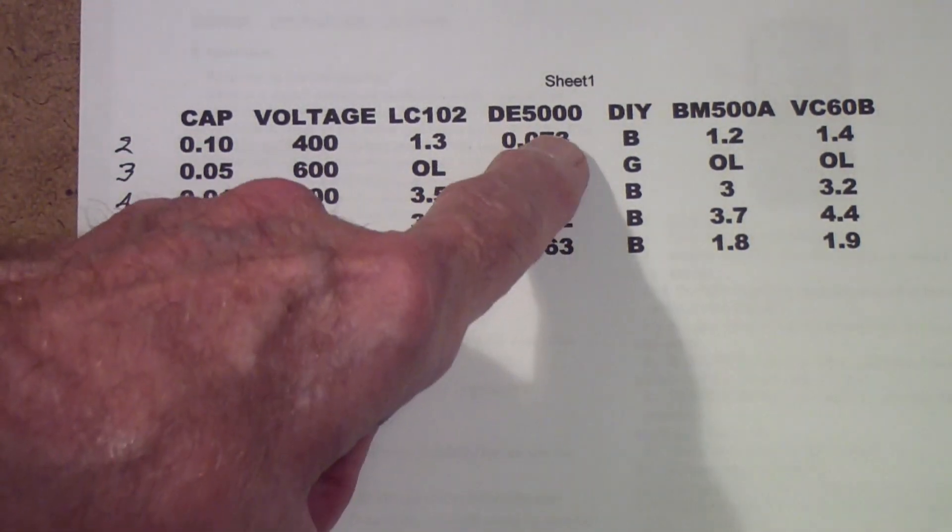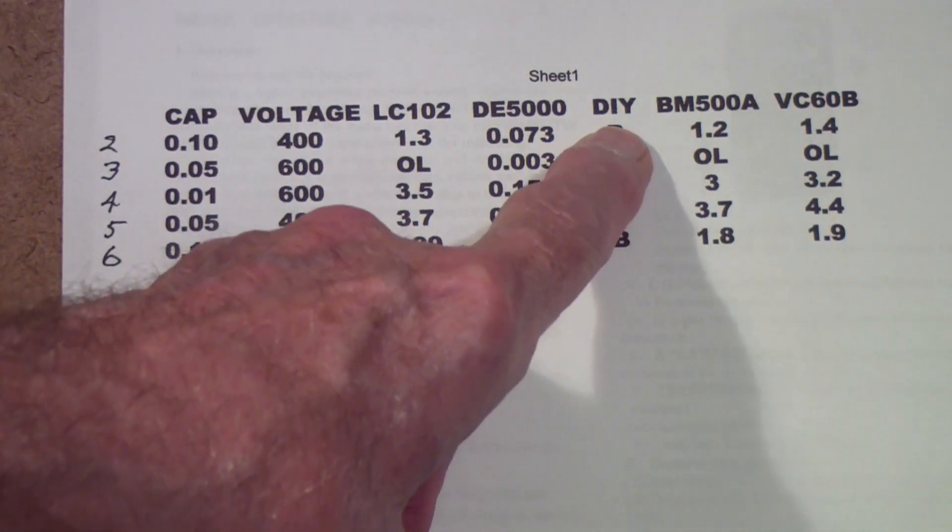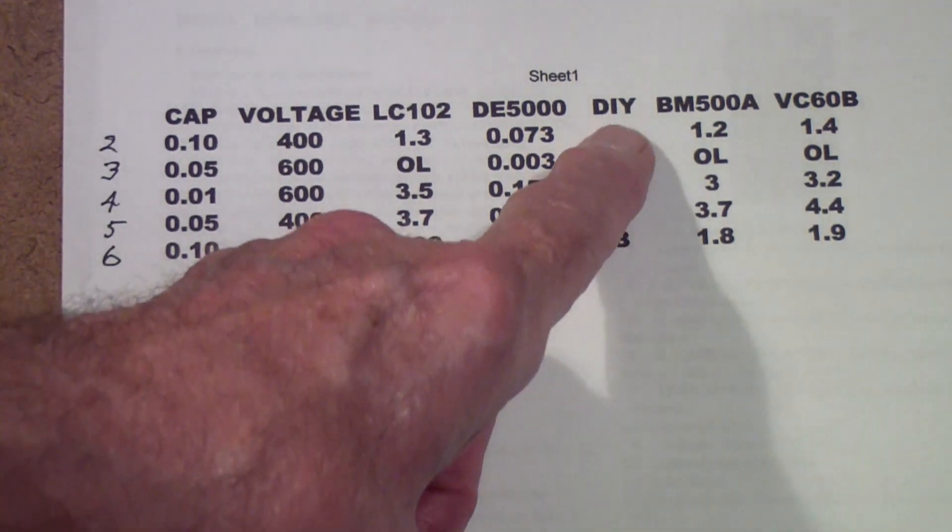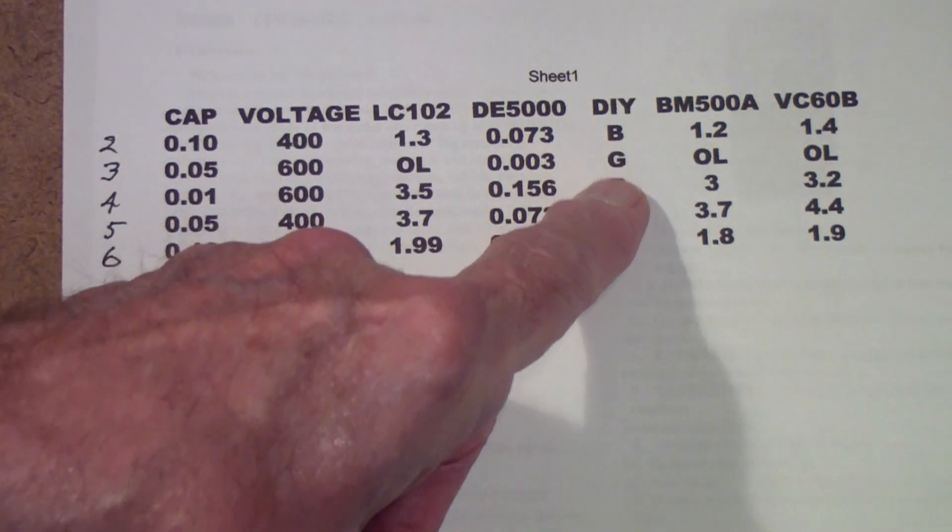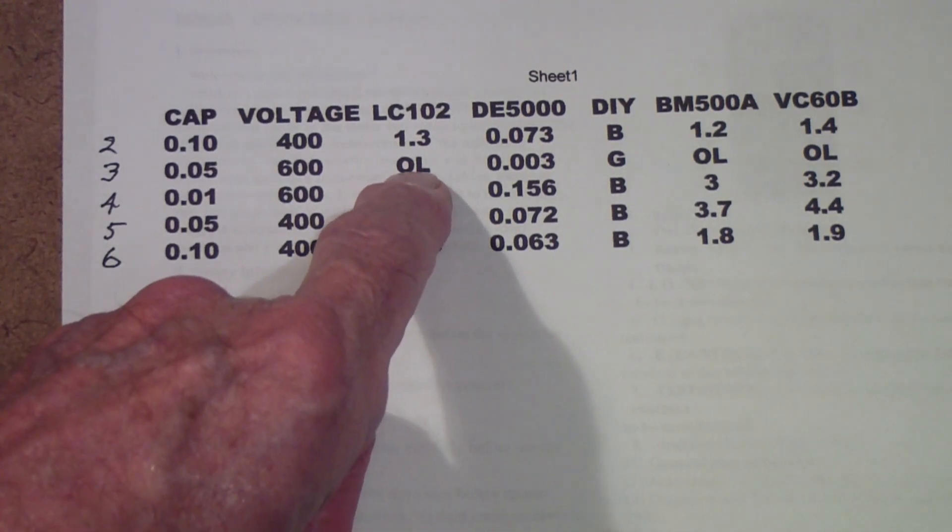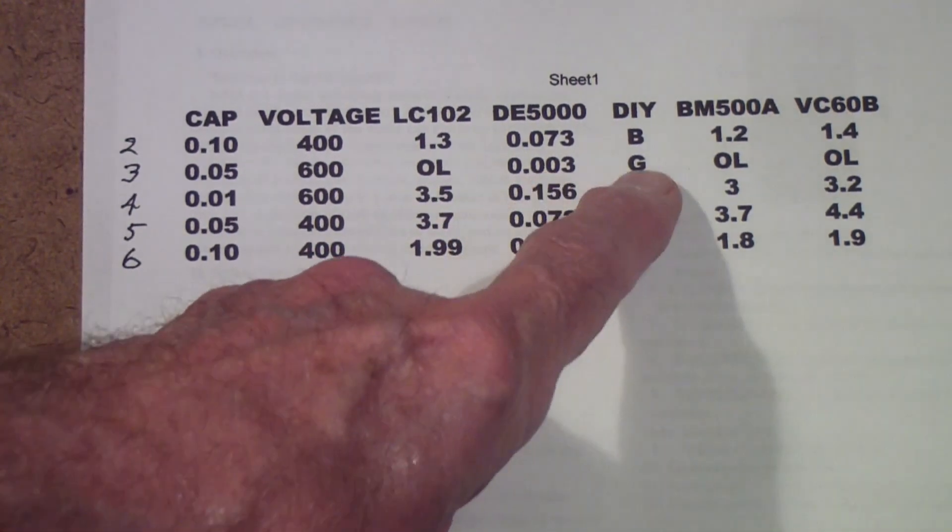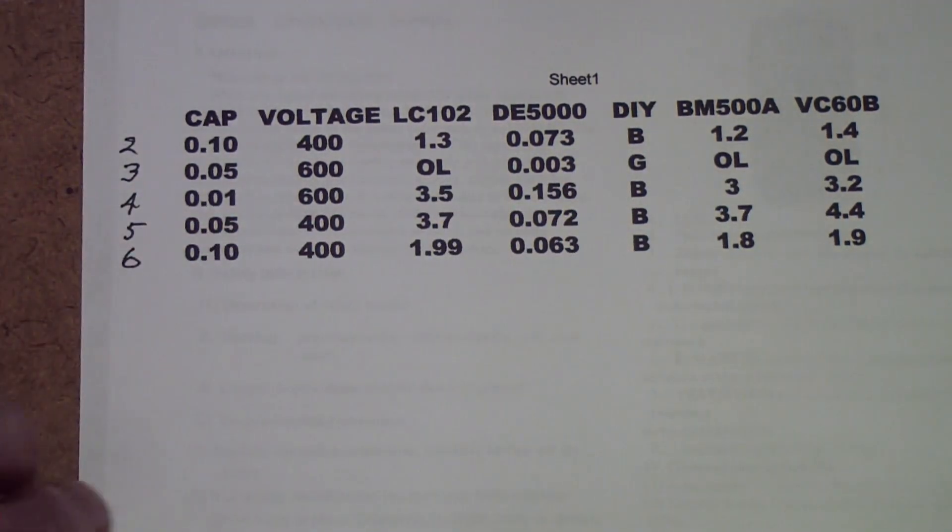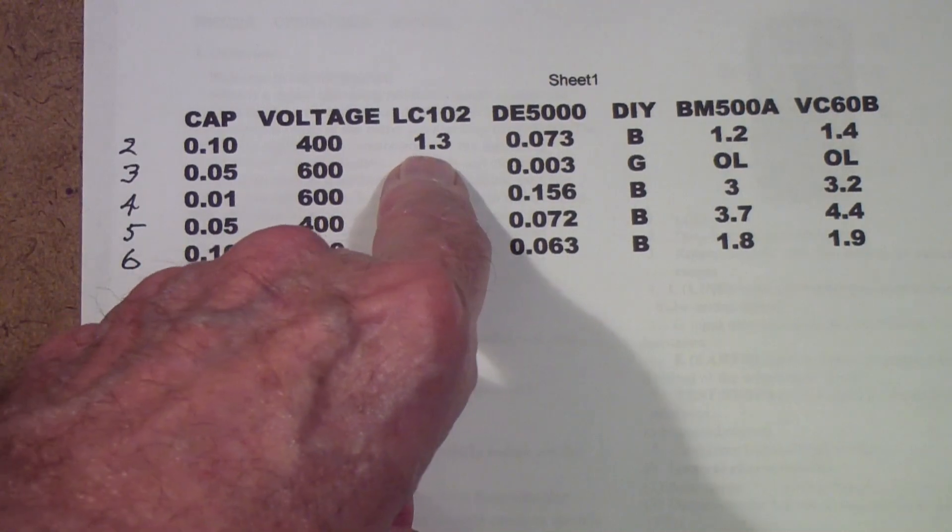So this is the DE5000 and the dissipation, which is related to the leakage resistance. This is the DIY tester that I built, a little neon bulb tester that was built to test capacitors in tube circuits. B means bad, G means good. So it rated this one that tested on the LC102 to have very high leakage resistance and very low dissipation on the DE5000 as a good capacitor, and all the rest as bad. Then the BM500 - that's this meter - showed 1.2 megaohms for leakage. Remember over here on the LC was 1.3, so very close.